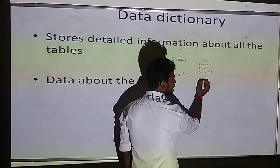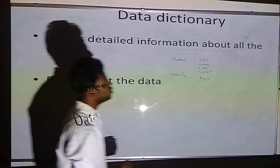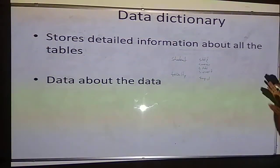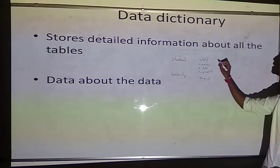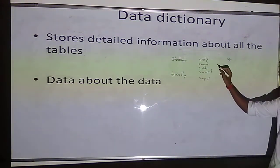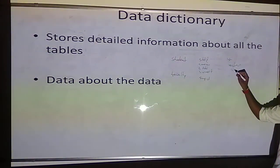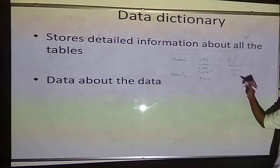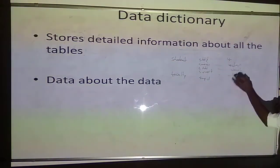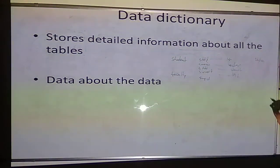Faculty will have employee ID, employee name, employee address, salary, and so on. The data dictionary also stores details of each and every column — what kind of data is being stored. For student ID, we store an integer; for name and address, we use characters; for marks, again integer. It also records how much memory each column is taking. Everything about the tables will be stored by the data dictionary.